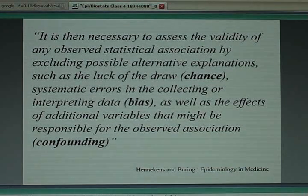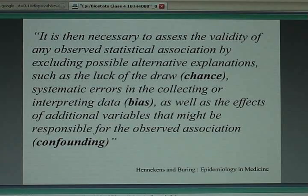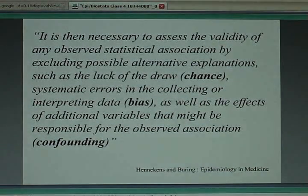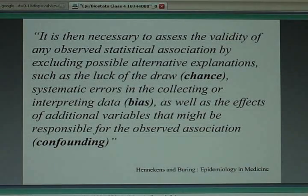This quote says it's necessary to assess the validity of any observed statistical association by excluding possible alternative explanations. One alternative is the role of chance — we'll cover that in two weeks with statistics. Another real possibility is a biased study design: you could have enrolled the wrong people or recorded the wrong information, so the number you see doesn't truly reflect the effect of telemedicine. That's what we mean by bias. There's also the possibility that other variables are responsible for the association — those are what we call confounding factors, or confounders.